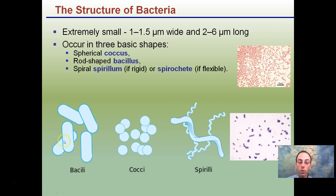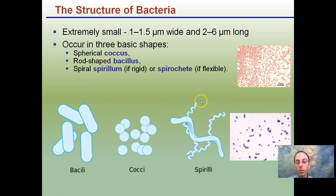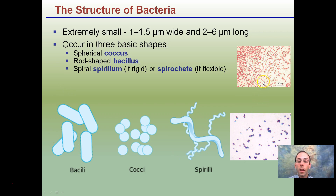The structure of bacteria also determines its shape. Spherical shapes are called cocci. We also have bacillus and spirillum. Different types of shapes can be used to help identify certain bacteria, and gram staining is important in helping identify them by shape.